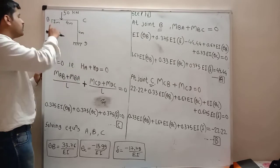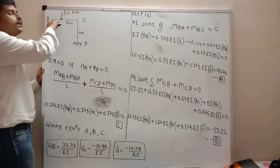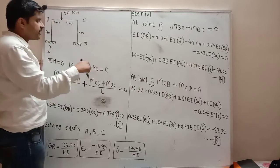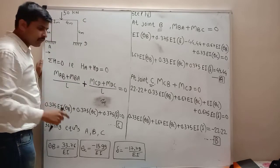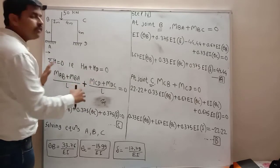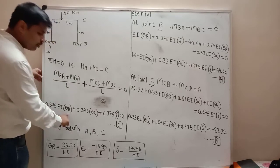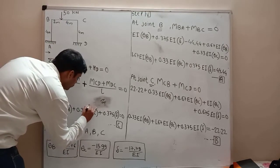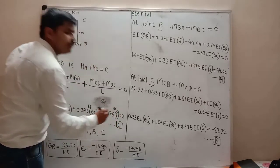The third equilibrium equation comes from the horizontal equilibrium (shear equation): summation H = 0, so HA + HD = 0. HA = (MAB + MBA) / L, where L is the length of span AB. Similarly, HD = (MCD + MDC) / L, where L is the length of span CD. After substituting all values, we get: 0.375·EI·theta_B + 0.375·EI·theta_C + 0.375·EI·delta = 0, which is equation C.